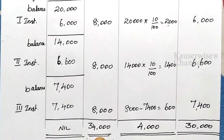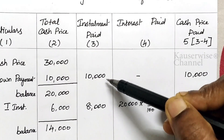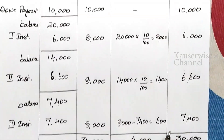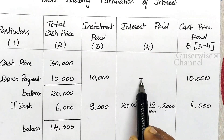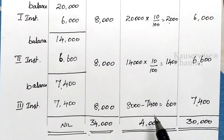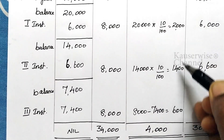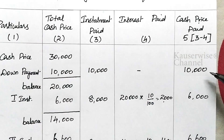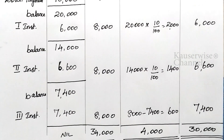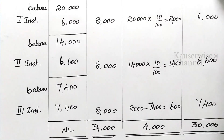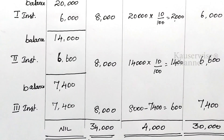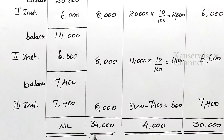Total installment paid: down payment 10,000 + first installment 8,000 + second installment 8,000 + third installment 8,000 = 34,000. Interest column: no interest on down payment; first installment 2,000; second installment 1,400; third installment 600 — total 4,000. Cash price column: down payment 10,000; first installment 6,000; second installment 6,600; third installment 7,400 — total cash price paid 30,000. So total cash price 30,000 plus interest 4,000 equals total hire purchase price 34,000.